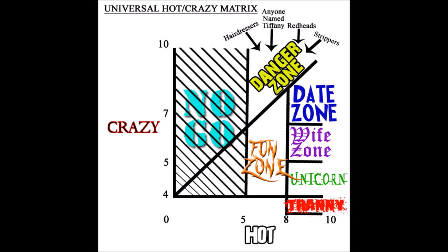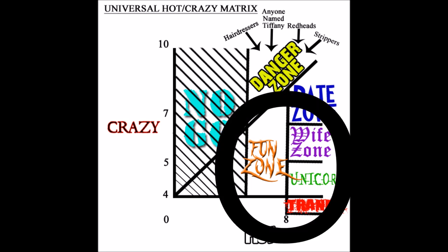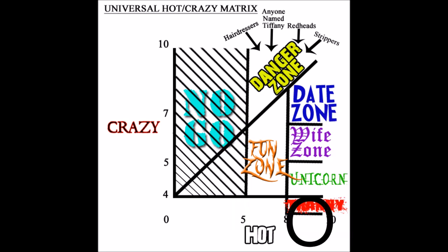Now, moving on, you have this zone here. This is below the crazy line, above an 8 hot, but still about a 7 crazy. This is your date zone. You can stay in the date zone indefinitely. These are women that you introduce to your friends and your family. They're good looking and they're reasonably not crazy most of the time. So you can stay here indefinitely.